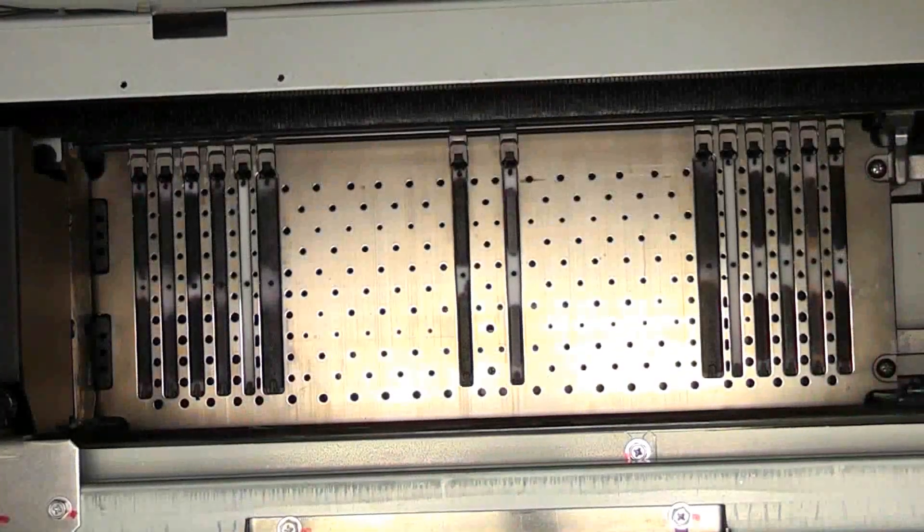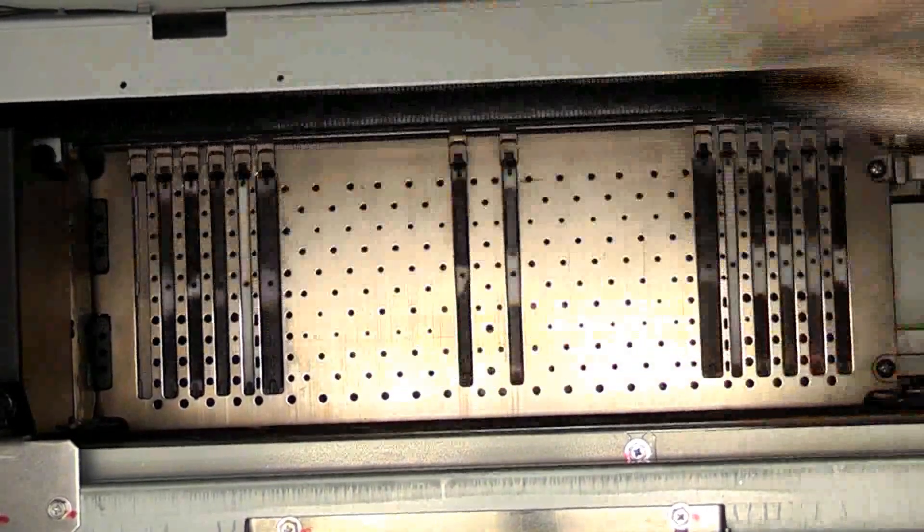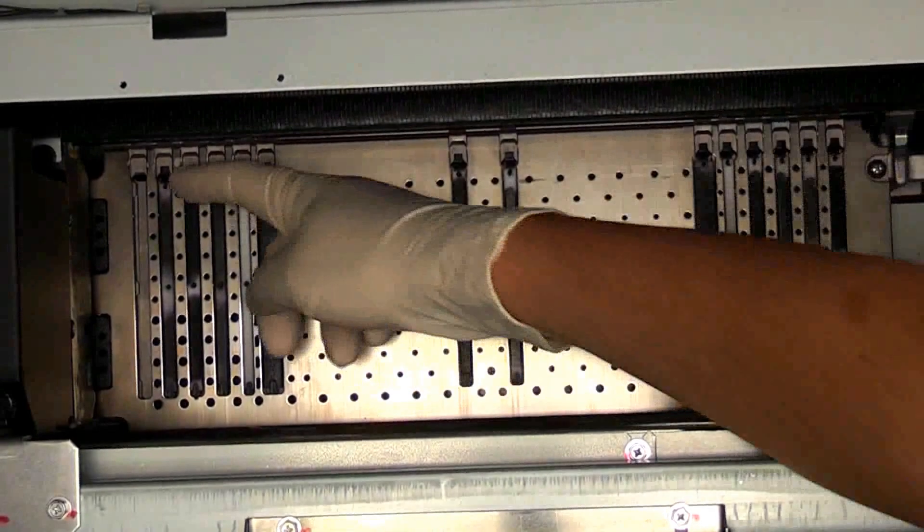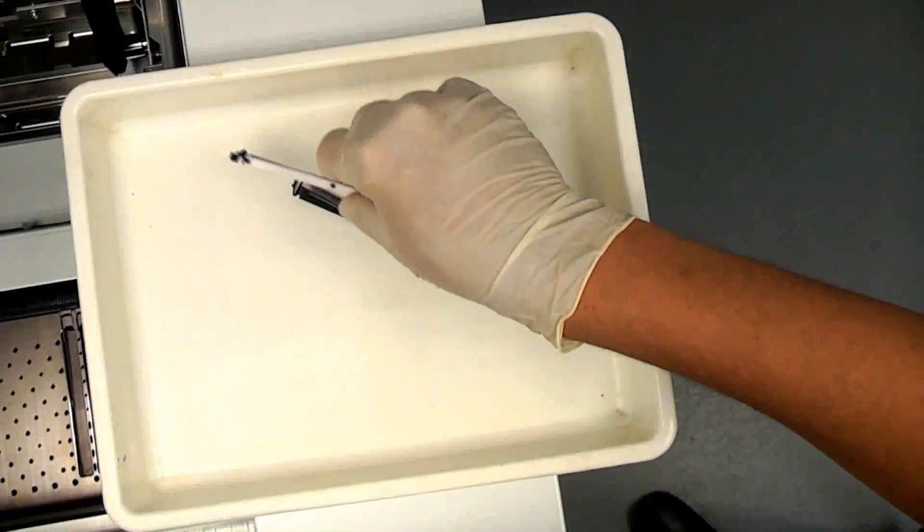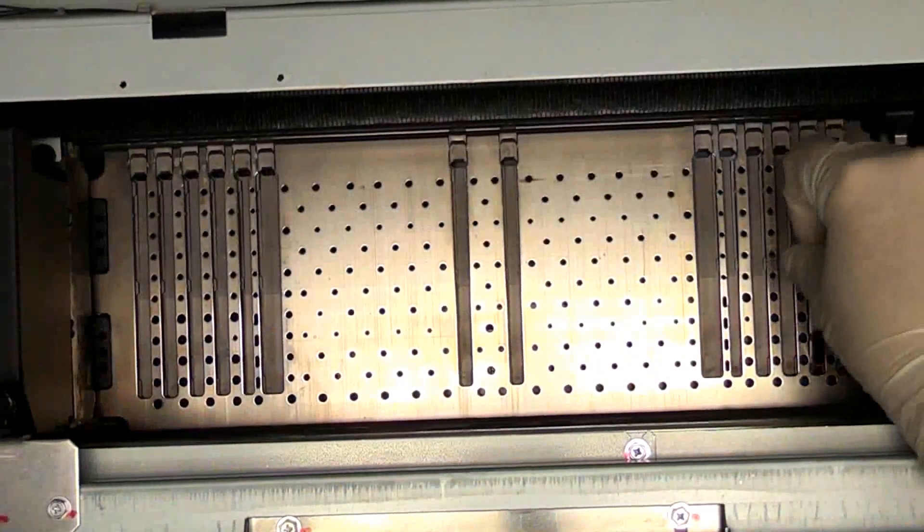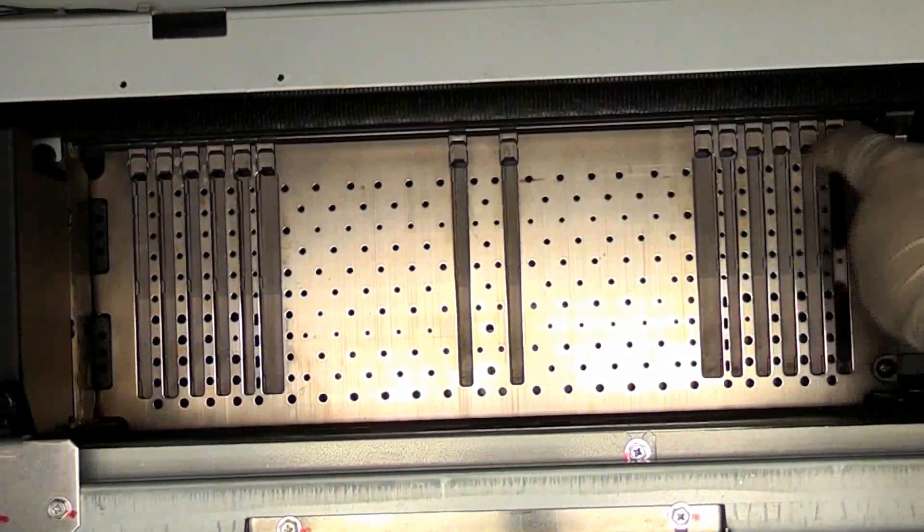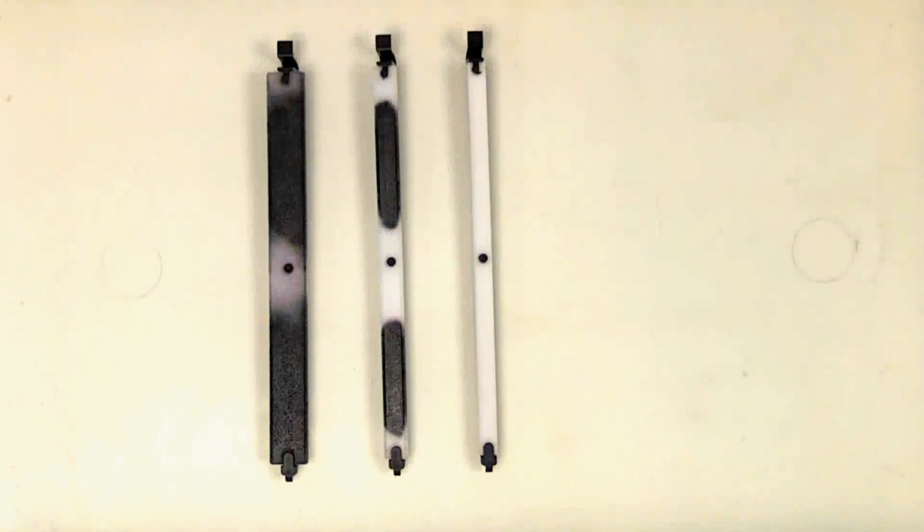Carefully remove the absorbers from the printing mount by pressing the clip and lifting them out into a tray. Please note there are three different sizes of absorbers.